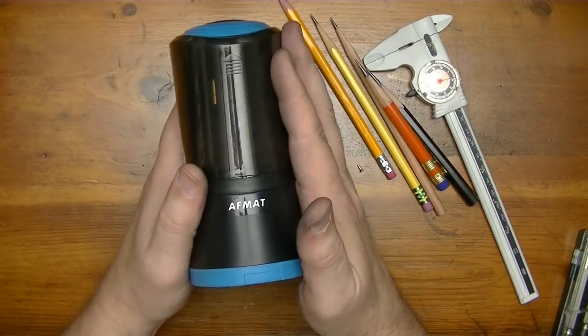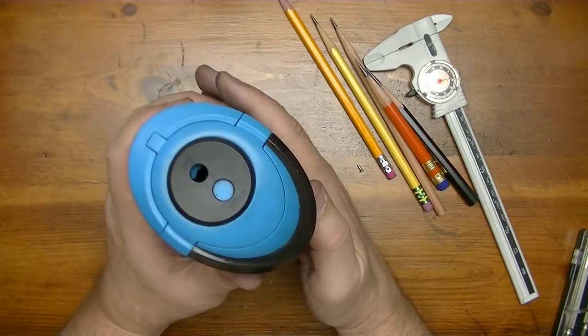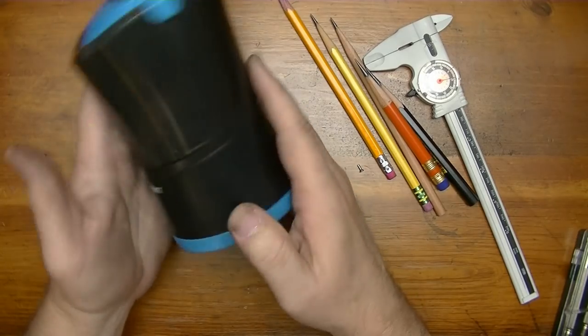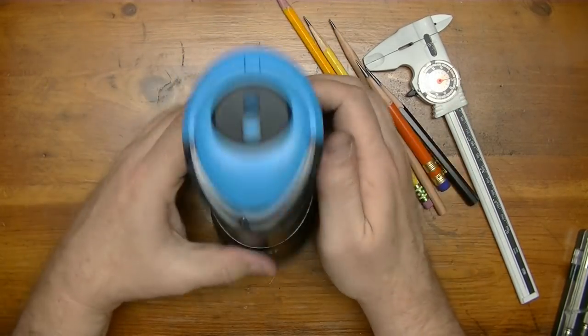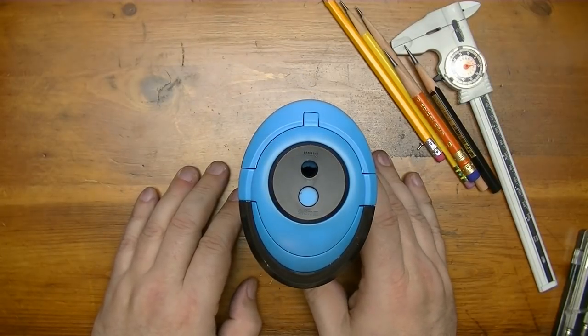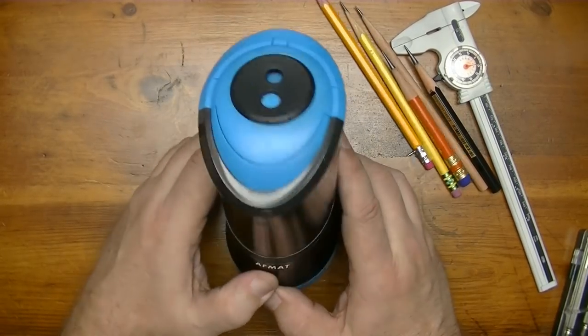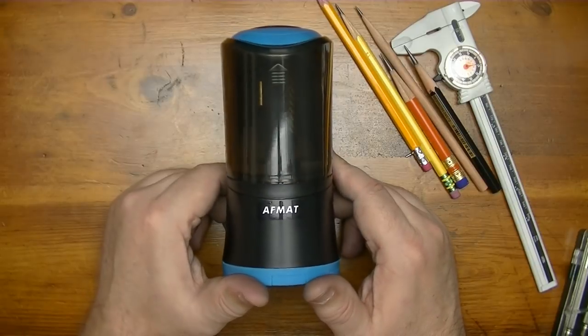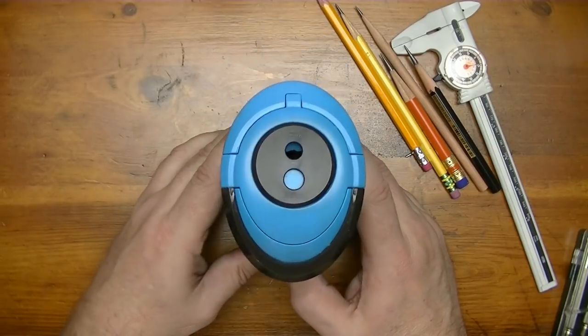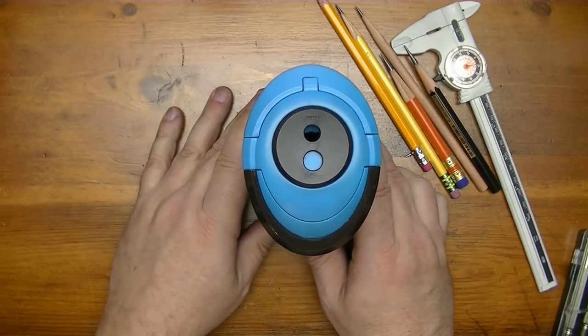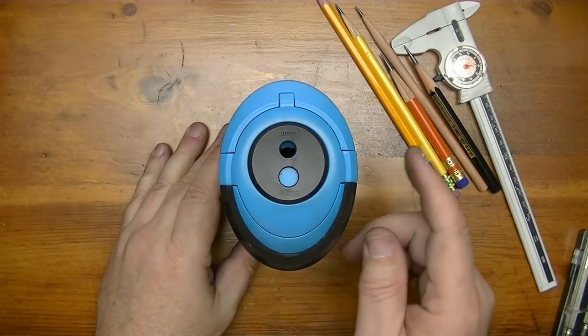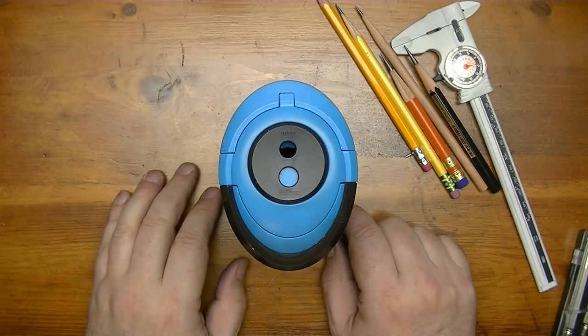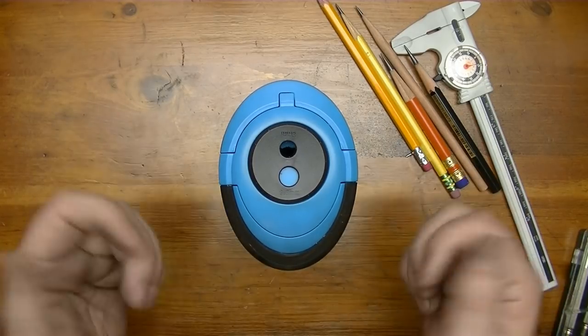That's the AFMAT model PS09, the link to get this sharpener is down in the description below. I'm gonna have to give this sharpener my most definite two thumbs up. I sure hope that you like this review of the PS09 AFMAT long point sharpener, and if so I sure would appreciate a thumbs up. If you haven't already done so, please subscribe. I will see you in the next video.